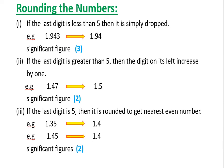Third rounding rule: if the last digit is exactly 5, round to the nearest even number. For example, 1.35 — the preceding digit 3 is odd, so we increase it: 1.4. For 1.45 — the preceding digit 4 is already even, so no change: 1.4. In both expressions the result has 2 significant figures.